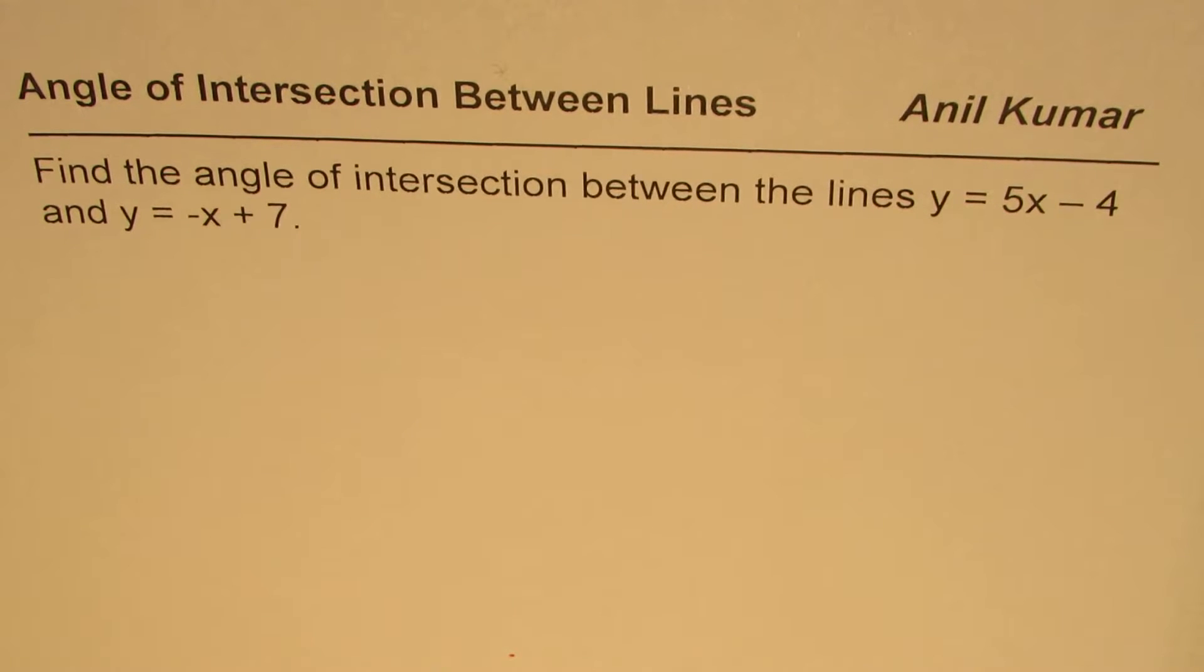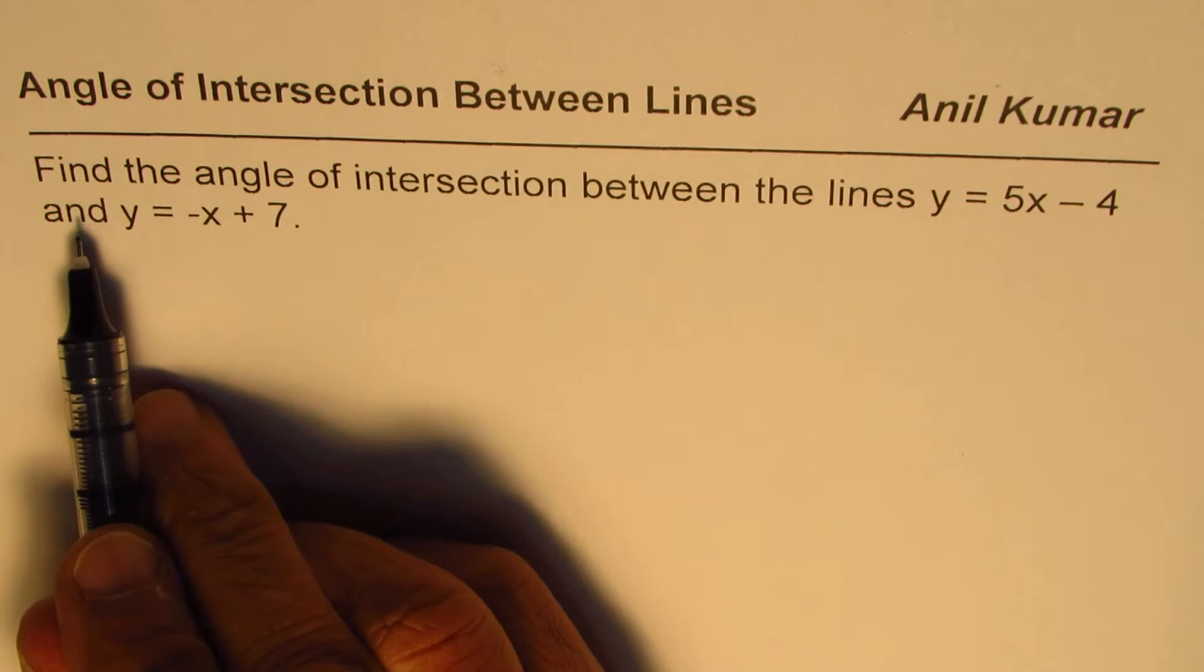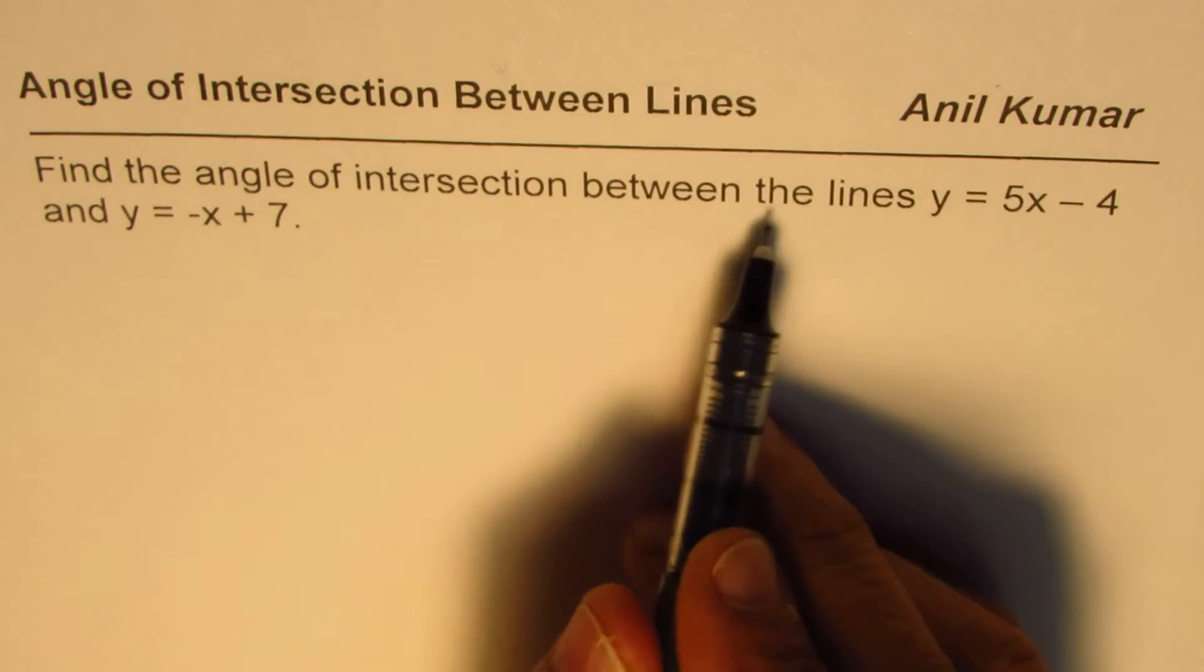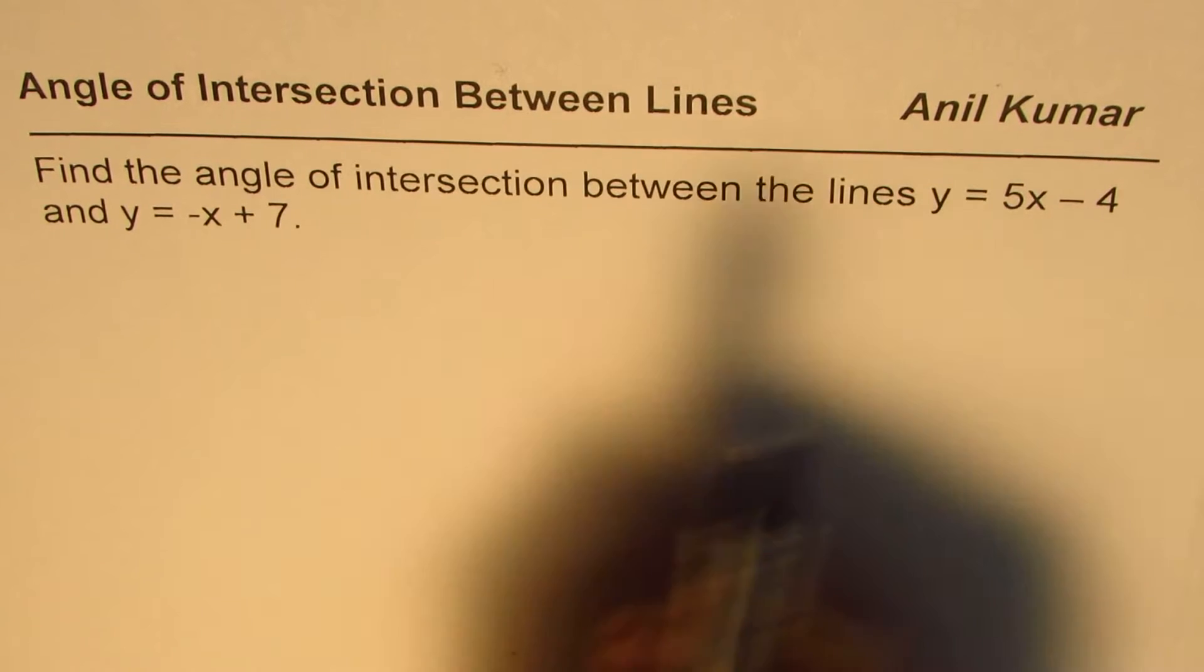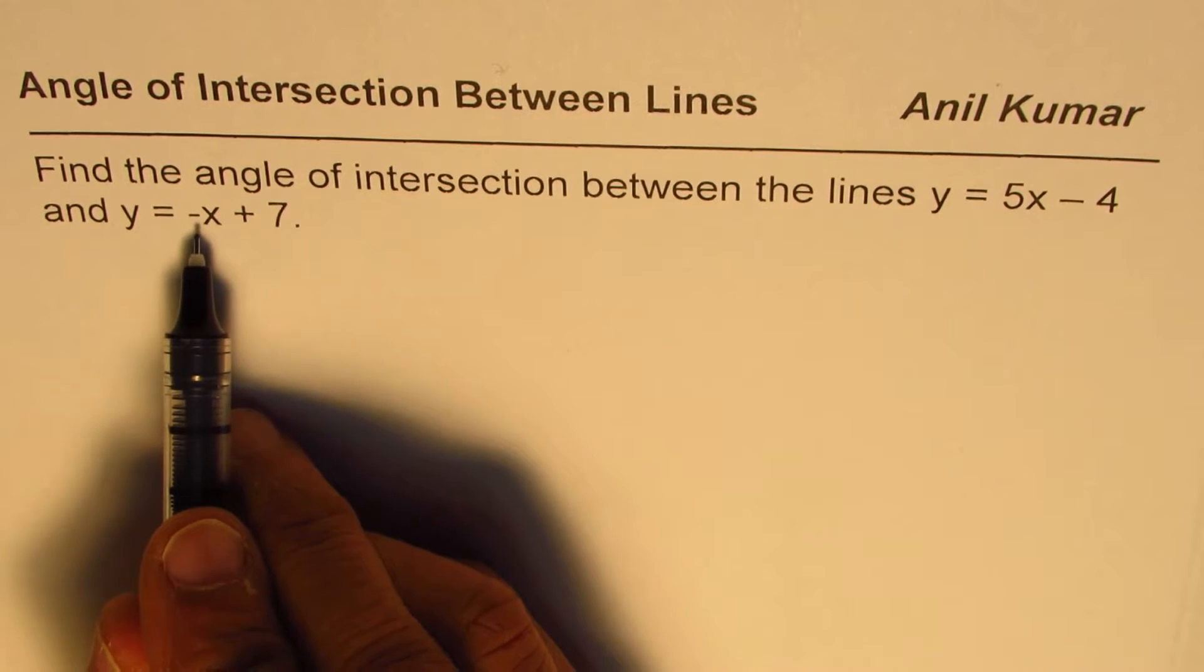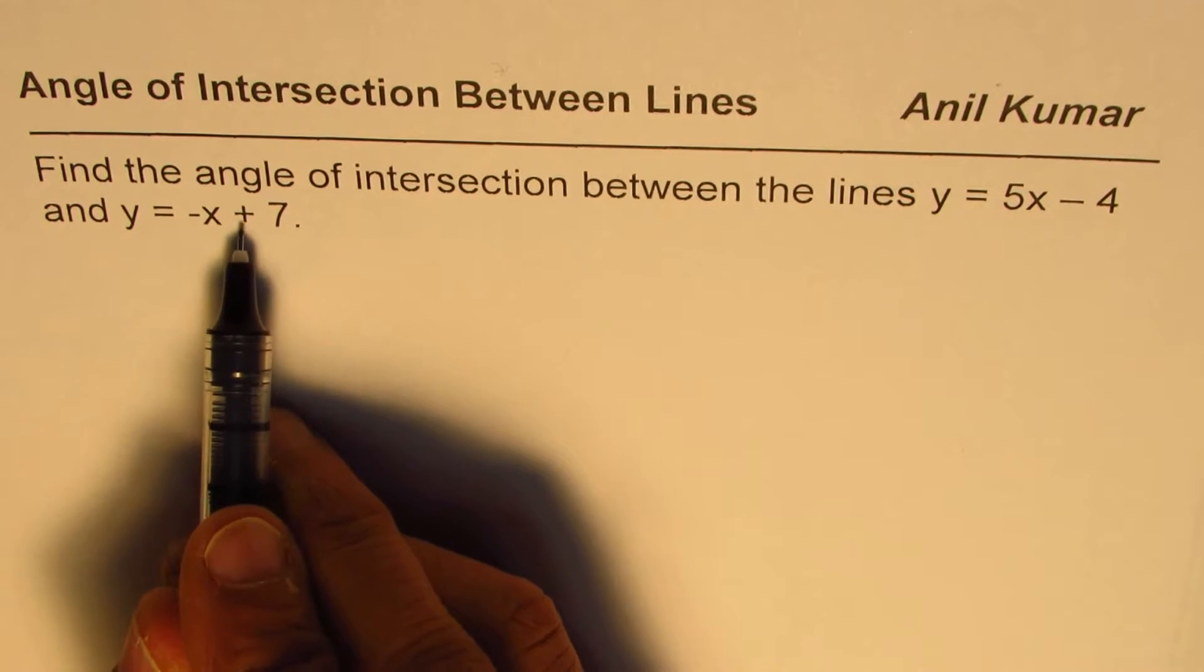I'm Anil Kumar and in this video we will learn how to find angle of intersection between intersecting lines. The question is find the angle of intersection between the line y equals 5x minus 4 and y equals minus x plus 7.